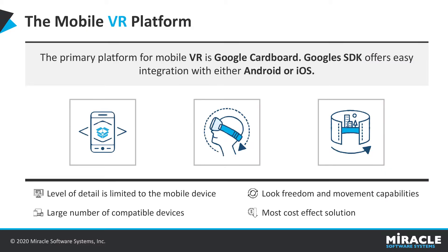The primary platform for mobile VR is Google Cardboard. Google's SDK offers easy integration with either Android or iOS. One of the benefits is that this will give you a large number of target devices, as well as a very low cost for them, as most people can utilize their own phone rather than having to buy any device.